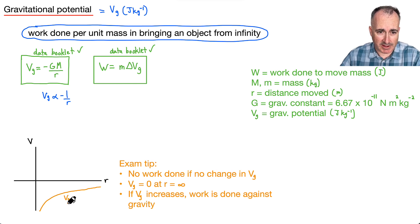So same idea here, except we're going to say, well, there's no work done if there's no change in V. So in other words, if you haven't moved anywhere along this curve, then you've done no work. That should make sense. And of course we're going to define again, Vg is 0 at r equals infinity, just like we did before with the energy.